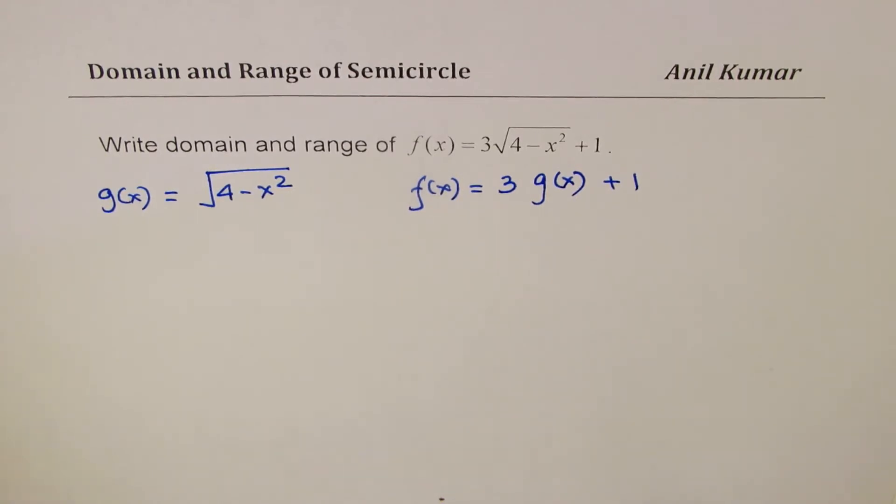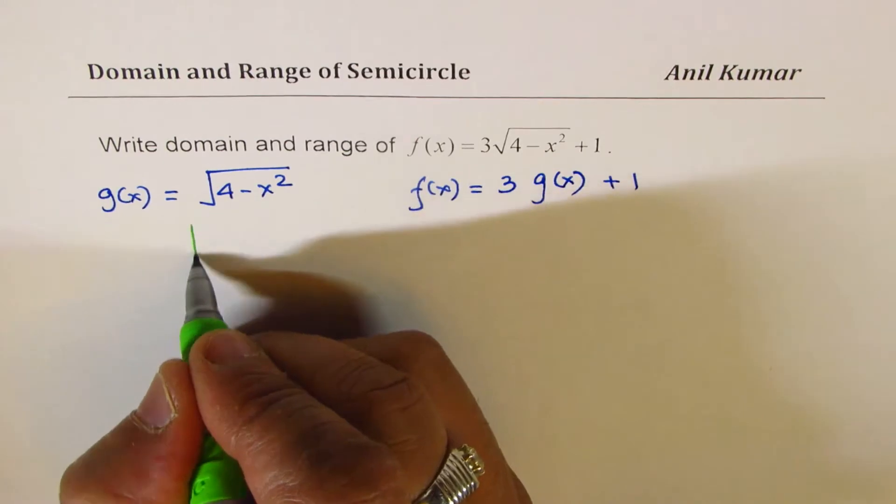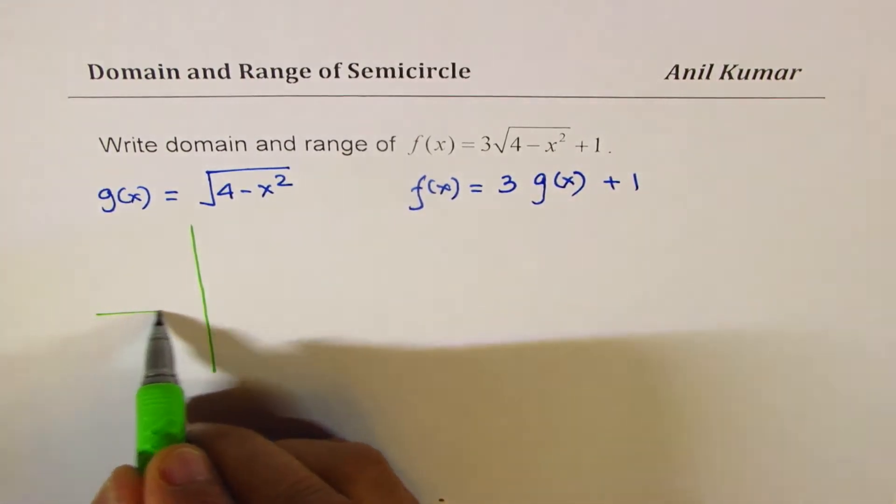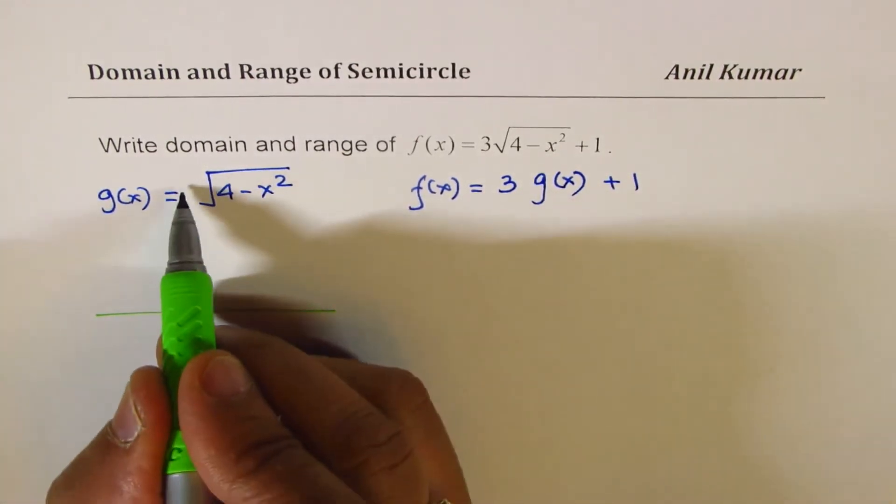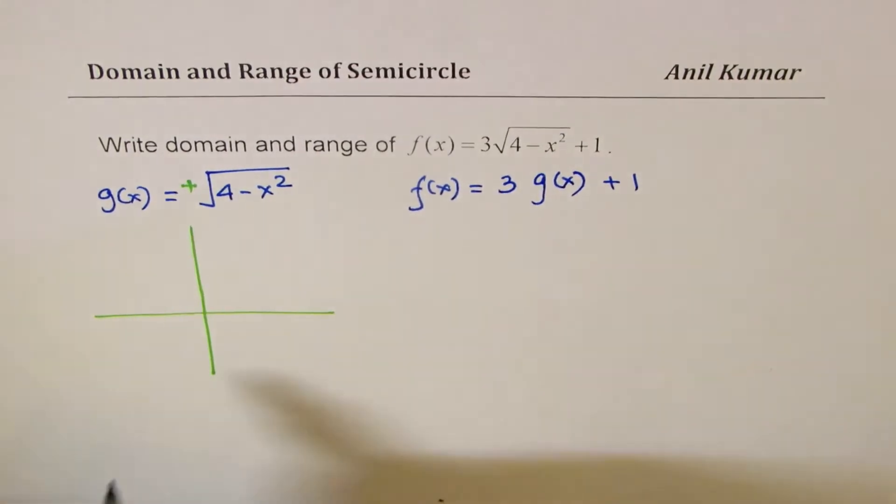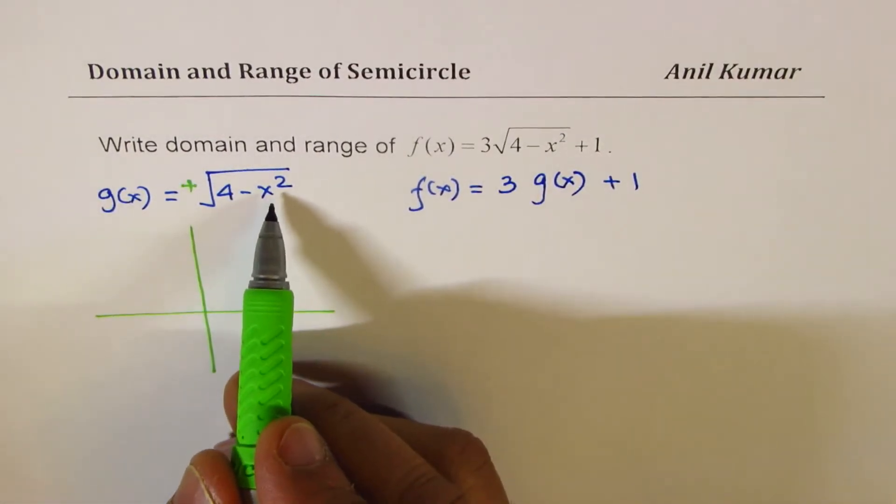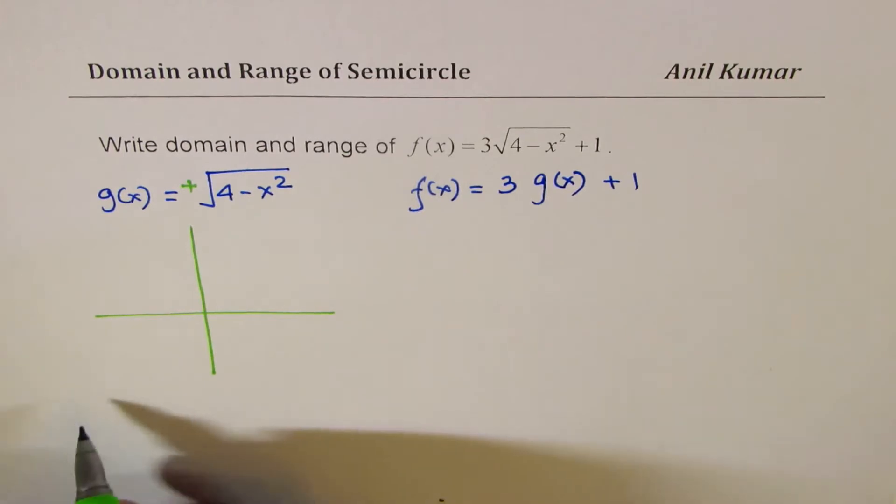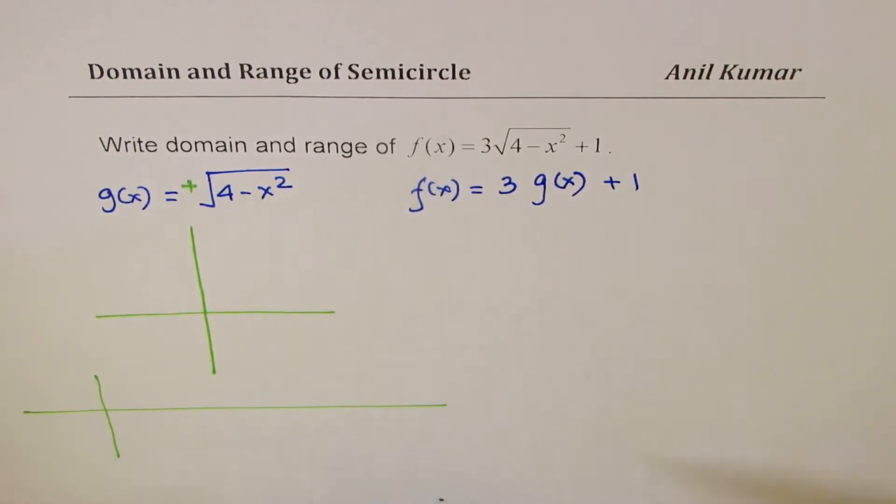So what is g(x)? On a coordinate plane, let's try to sketch it. Square root means always positive, right? Now, if I write x equals 4, then what do I get? Well, let's make a table. It helps.